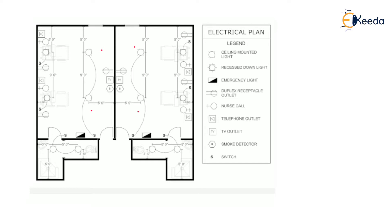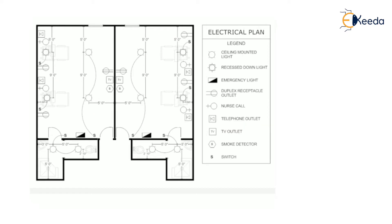Likewise, there are other symbols used. You can see the telephone outlet provided here and here. Then there is the duplex outlet — this is another symbol for a telephone duplex outlet. All our electric plan is done according to these symbols.